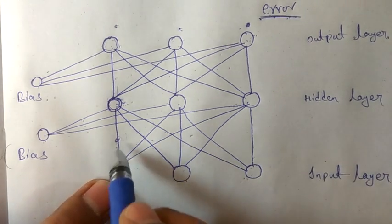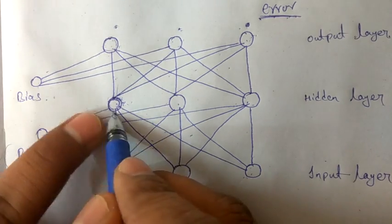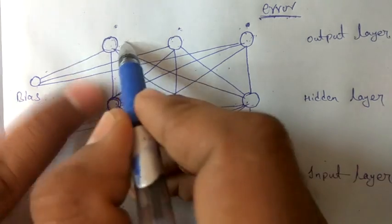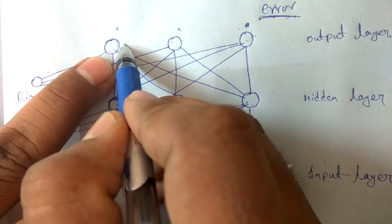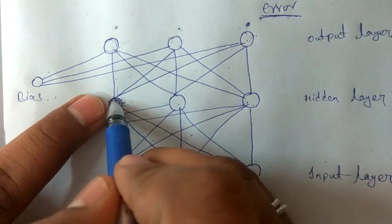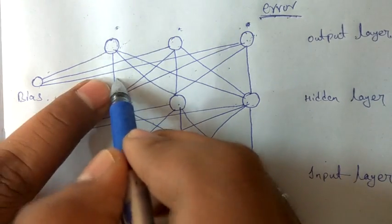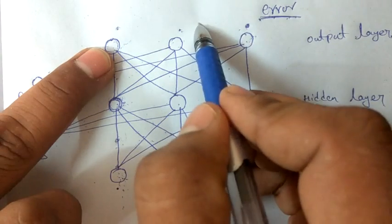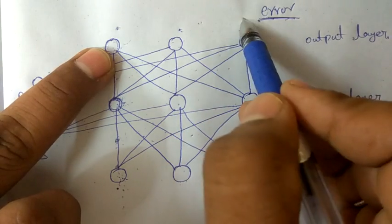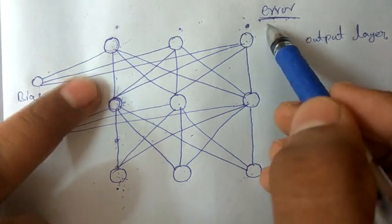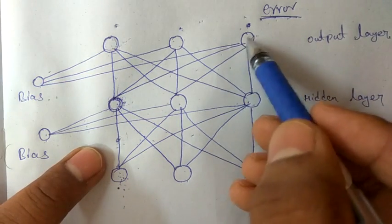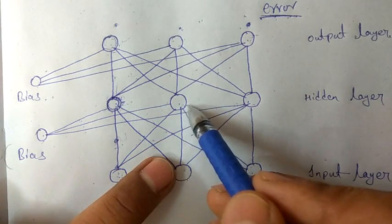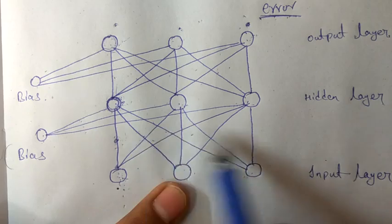To summarize: we give the input, multiply it with the weights, add the bias, and apply the activation function. We give the hidden layer output as input to the output layer, multiply with weights, add the bias, and apply the activation function to get the output. This output is then subtracted from the target or expected value to get the error, which is propagated back to the hidden layer to change the weights there.